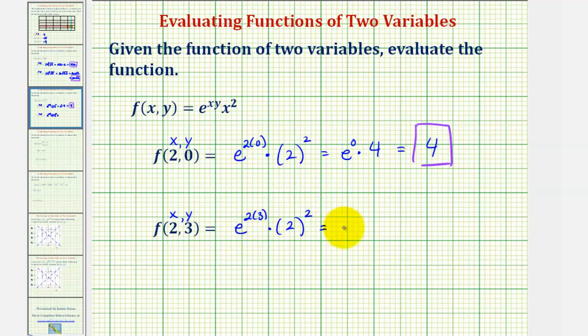So we'd have e to the power of 6, or e to the sixth times 4, which would be 4e^6. This would be the exact value, since e is an irrational number.